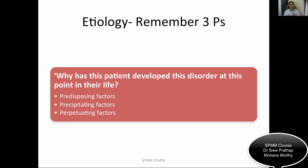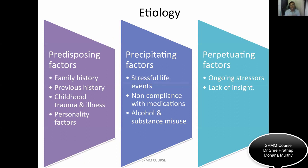When discussing etiology in some stations, remember this question: why has this patient developed this disorder at this point in time? Remember the three P's: predisposing factors, precipitating factors, and perpetuating factors. Predisposing factors include family history, previous psychiatric illness, childhood trauma, and personality. Precipitating factors include stressful life events, non-compliance with medication, and substance misuse. Perpetuating factors include ongoing psychosocial stressors and lack of insight.